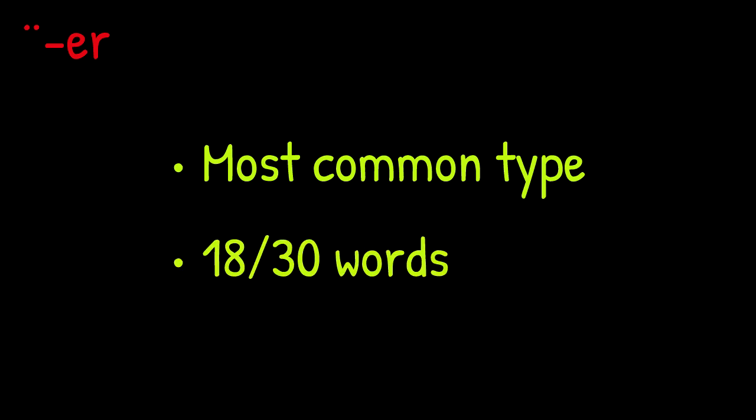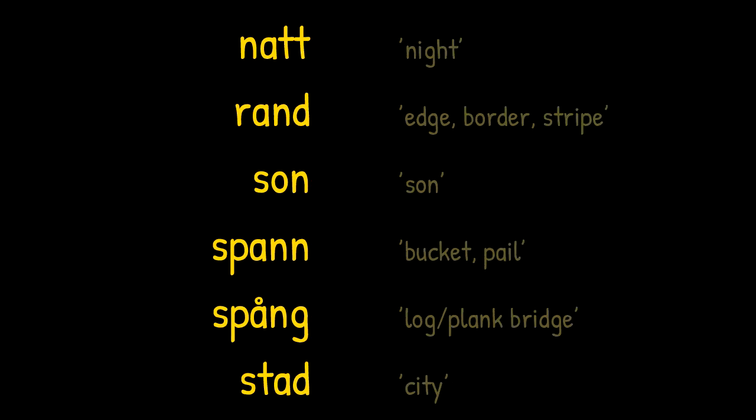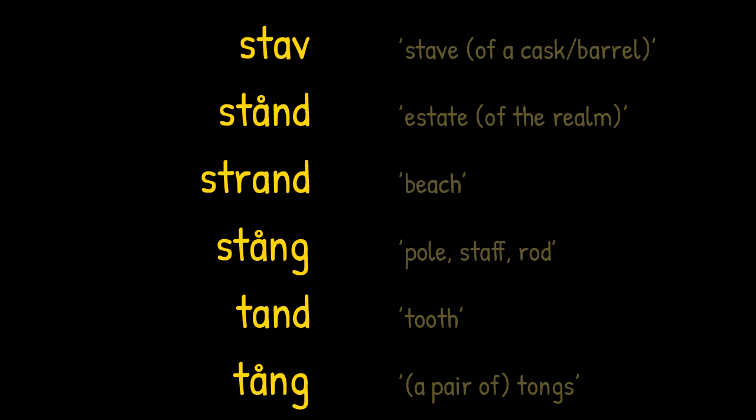The first group takes umlaut followed by the ending er. This is the largest of the umlaut groups, consisting of 18 out of the 30 words in question. In alphabetical order the words are: and, bot, brand, hand, land, ledamot, natt, rand, son, spann, spång, stad, stav, stånd, strand, stång, tand, tång.